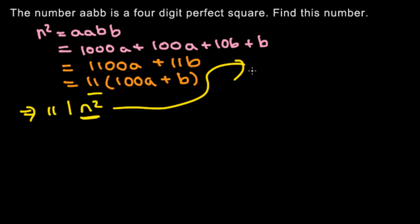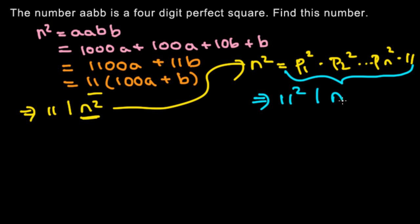then n² would be p₁², p₂², pₙ². Say that n² was divisible by 11 but not divisible by 11², then we would have an 11 right here. And that would mean that this whole number cannot be a square because this 11 doesn't have an even exponent. So what we can conclude here is that if n² is divisible by 11, it must also be divisible by 11².